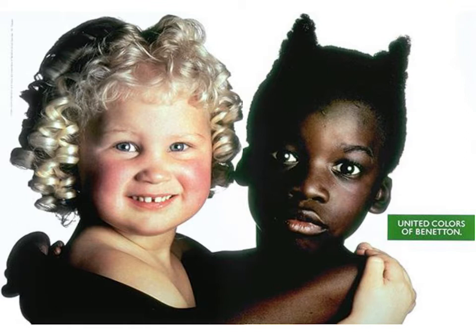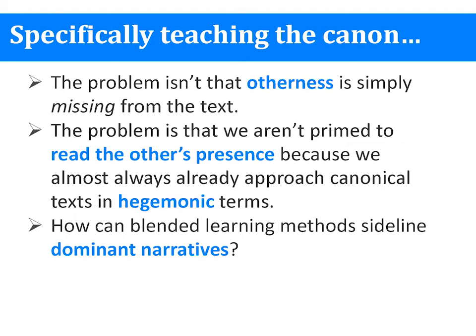It's an ad for clothing from the United Commerce Society. Specifically for teaching the canon, the problem isn't that otherness is completely absent. The problem is that we're not actually trying to read the presence of that other when it appears to be missing, because we always already approach dominant narratives in hegemonic terms. What I wanted to look at was the ways in which blended learning methods could sideline these dominant narratives by really forcing students to literally look at the problems as they exist, like we just did with that advertisement.